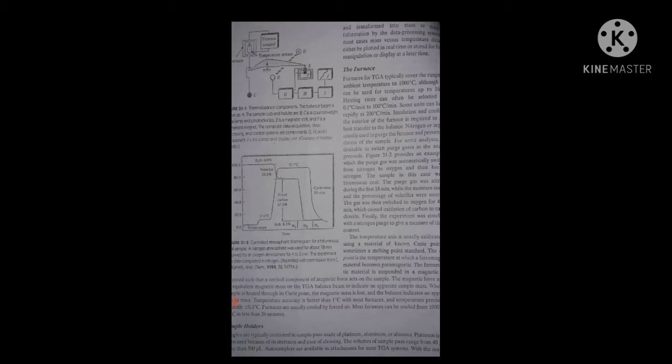This is the third part of TGA: the sample holder, in which the sample is contained. These are the pans which are mainly made up of platinum or aluminum. Platinum is most often used for two reasons: one, it is inert, and the other is easy cleaning.